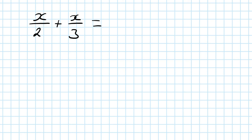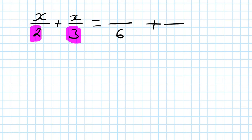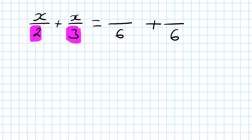x over 2 plus x over 3 — adding this is just exactly the same as adding fractions. Step one: we're looking for the lowest common denominator of 2 and 3, in other words the lowest common multiple. The lowest common multiple of 2 and 3 is 6. If you're not sure, just list them out: 2, 4, 6 — you stop, because 6 is a multiple of both 2 and 3.